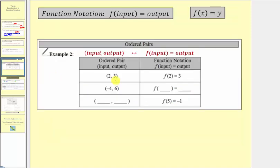In example two, we convert back and forth between ordered pairs and function notation. For an ordered pair, the first value is the input and the second value is the output. For function notation, f of the input equals the output. So the first value in the ordered pair corresponds to the input in function notation, and the second value corresponds to the output. For example, the ordered pair (2, 3) in function notation is f of 2 equals 3.